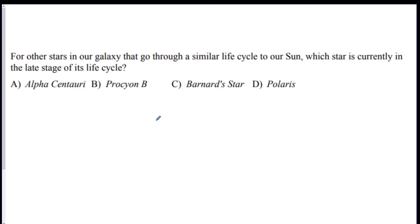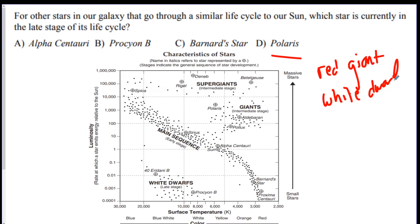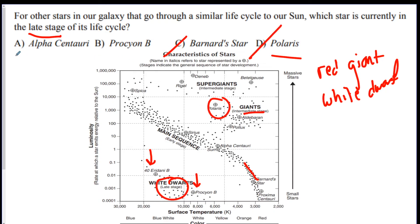For stars in our galaxy that go through a similar life cycle to our sun, which star is currently in the late stage? On the chart, the late stage is labeled. The answer is either Procyon B or 40 Eridani B — they're the only two labeled in the late stage. Barnard's Star is on the main sequence, Polaris is a giant in the intermediate stage, and Alpha Centauri is on the main sequence. So the late-stage stars are Procyon B or 40 Eridani B.